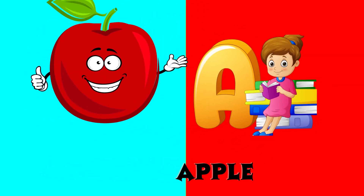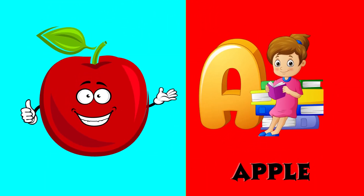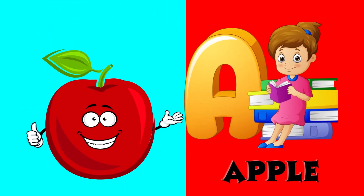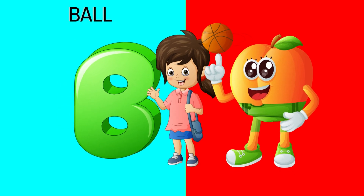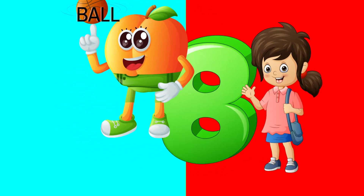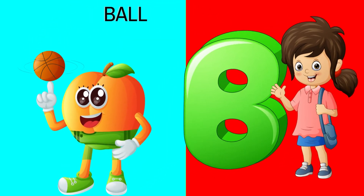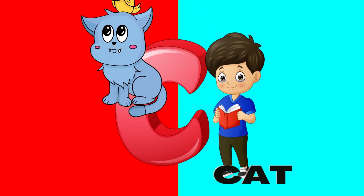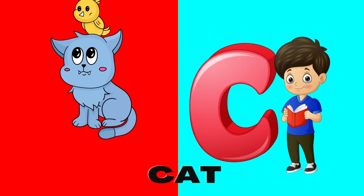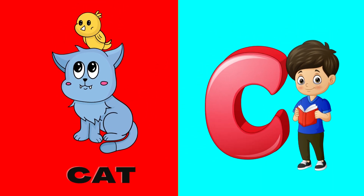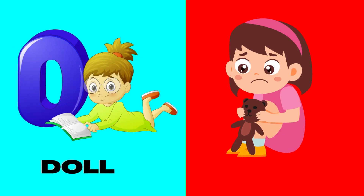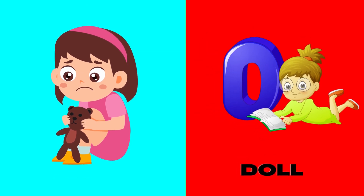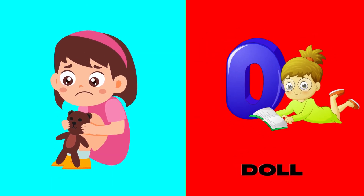A is for apple, a-a-apple. B is for ball, b-b-ball. C is for cat, c-c-cat. D is for doll, d-d-doll.